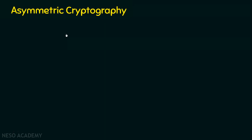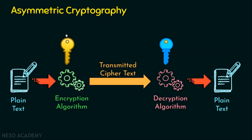Number two is asymmetric cryptography. In asymmetric cryptography, two different keys are used: one key for encryption and another key for decryption. The keys are a public key and a private key. In this technique, the sender will have two keys — the sender's public key and the sender's private key. Similarly, the receiver will also have two keys: the receiver's public key and the receiver's private key. The public key can be known to anyone, but private keys must be kept secret.